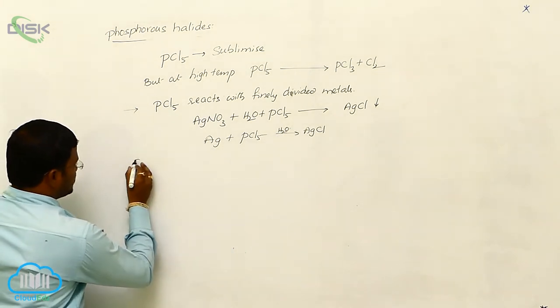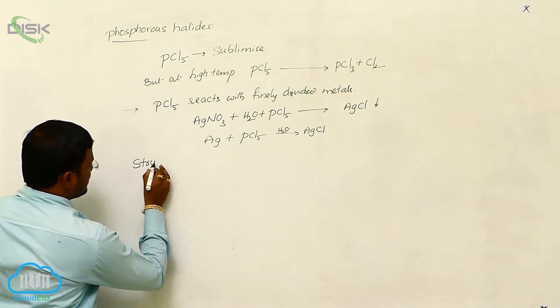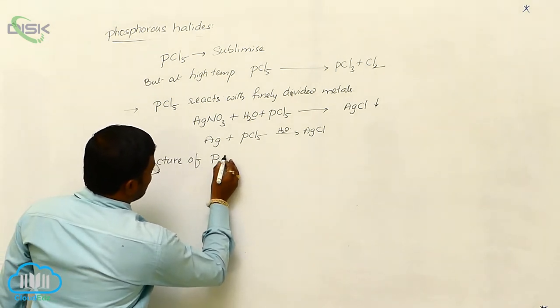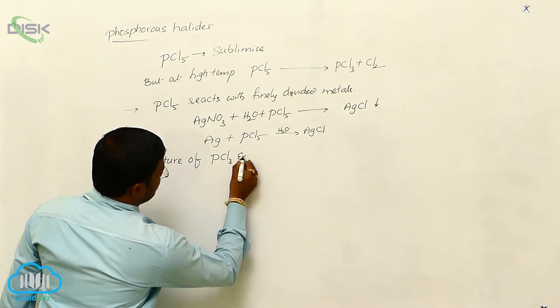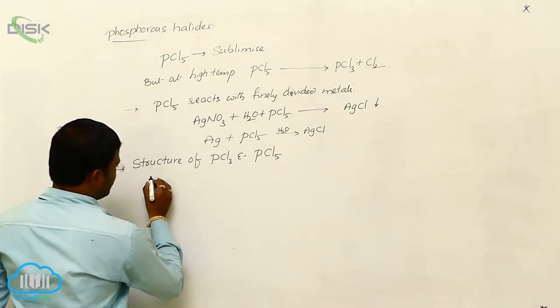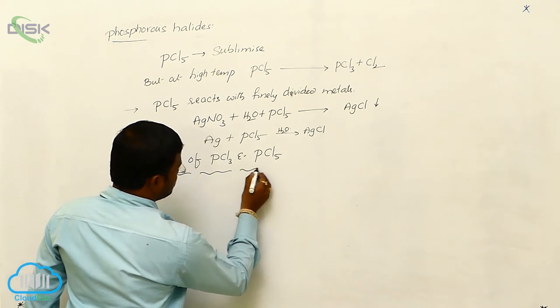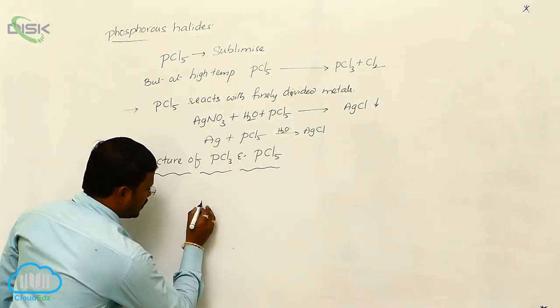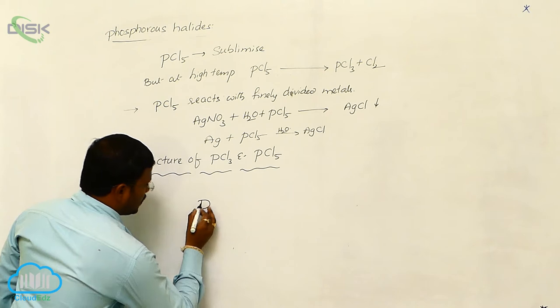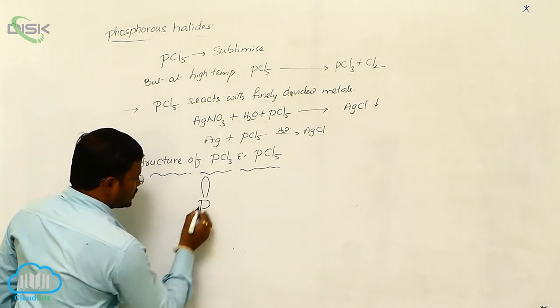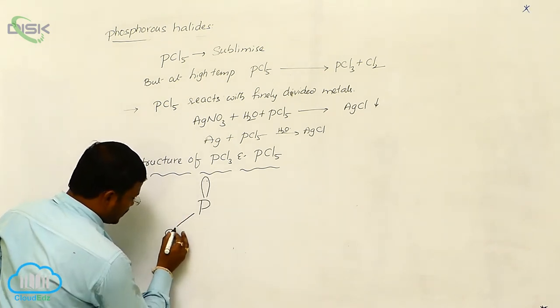Next, the structure of phosphorus trichloride and phosphorus pentachloride: like ammonia, phosphorus trichloride also shows pyramidal structure.